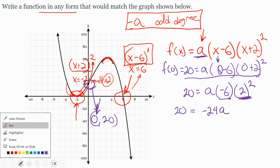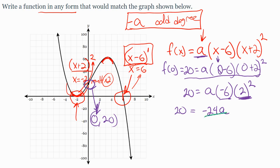And then to finish, to find a, I just divide by negative 24 and reduce. So a is going to be, divide top and bottom by 4, negative 5 sixths.